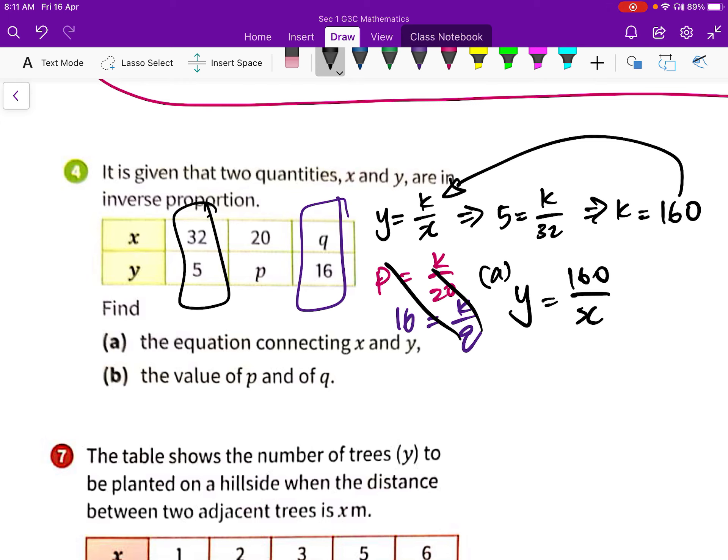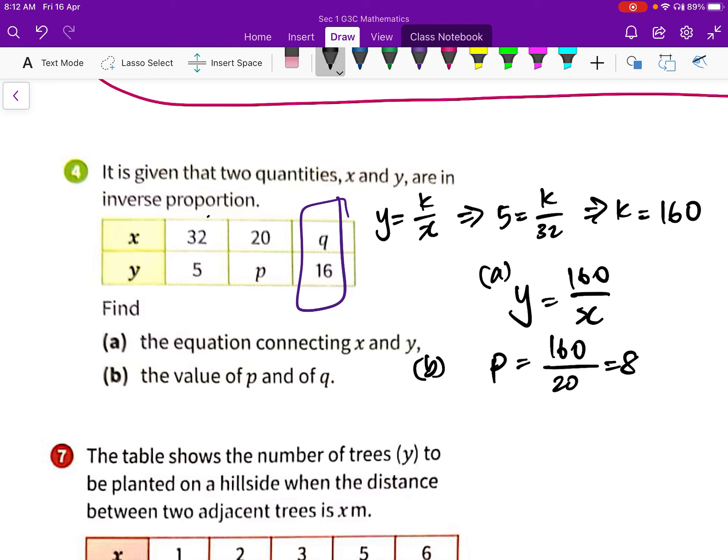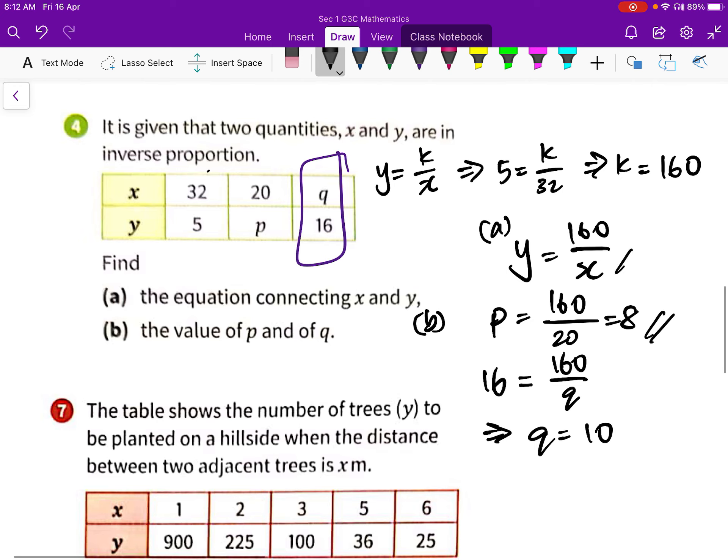And now we can answer part B. So, find the value of P first. P is a Y coordinate. So, P equals to 160 over when X is equal to 20, which is 8. And the final part, we are now substituting Y equals to 16. So, 16 equals to 160 over X coordinate, which is Q. Q equals to 10. These are our answers.